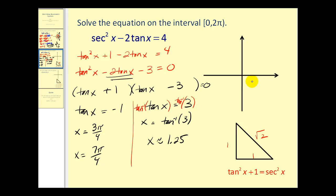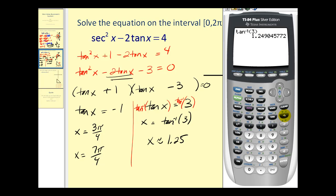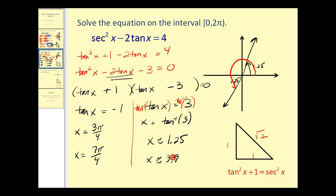Going back to our coordinate plane, 1.25 radians would be in the first quadrant. Well, tangent is also positive in the third quadrant. So if we sketch a reference angle of 1.25 radians, we can determine another angle in this interval that has a tangent function value of three. So that would be pi plus 1.25 radians, which is approximately 4.39.